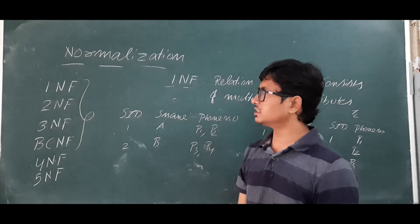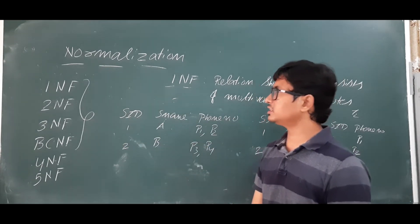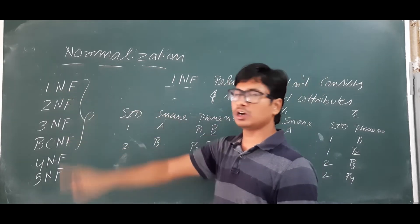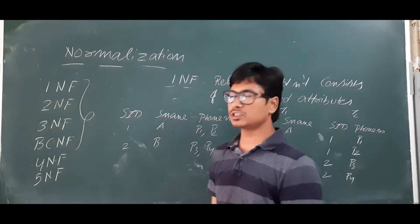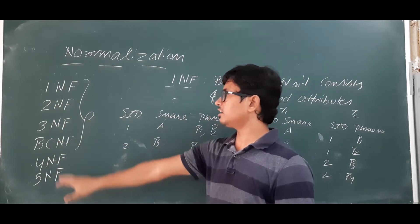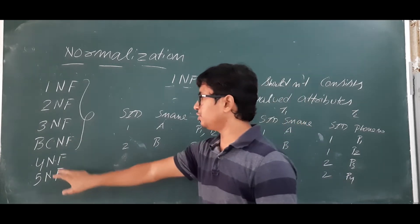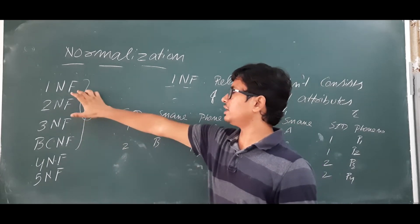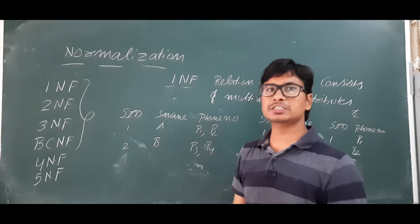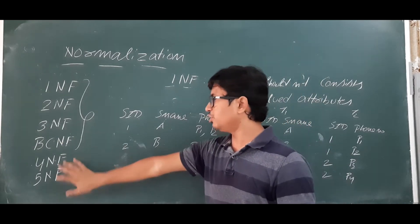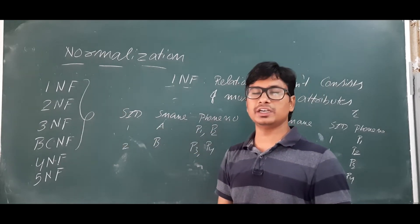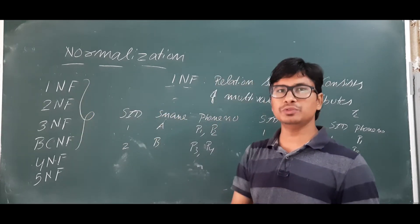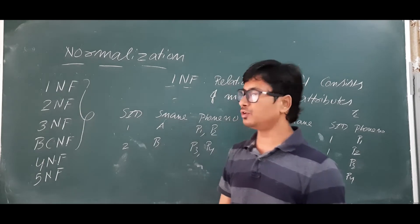Now we come to the various types of normalization. We have six types: the first is First Normal Form (1NF), Second Normal Form (2NF), Third Normal Form (3NF), BCNF which is Boyce-Codd Normal Form, 4NF, and 5NF. In these video lectures I will give more emphasis on 1NF, 2NF, 3NF, and BCNF. For the GATE exam, UGC NET exam, or any competitive exam, the syllabus will be up to BCNF.